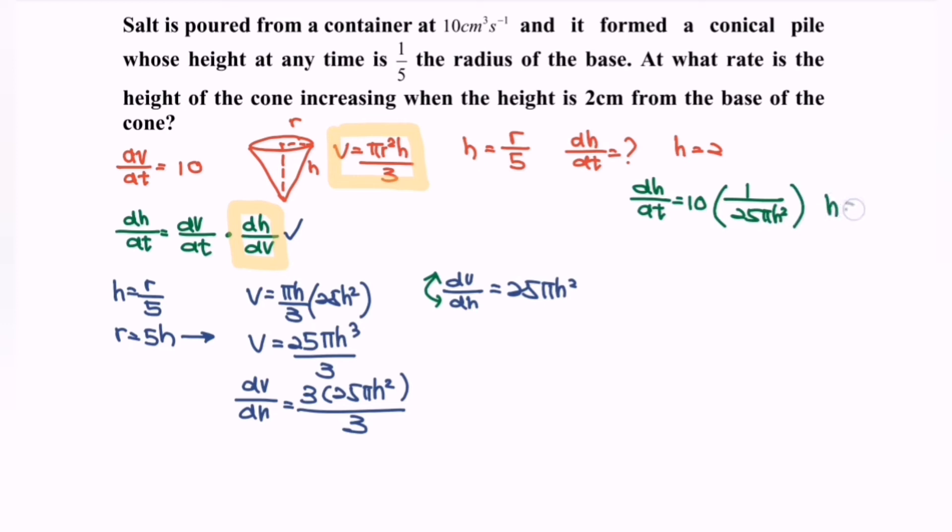When h is equals to 2, substitute the value. So we will have 10 over 25πh², we will have 4, so we will have 10 over 100π.